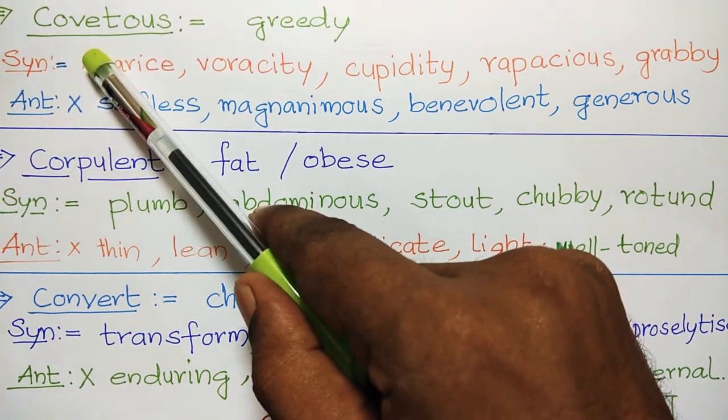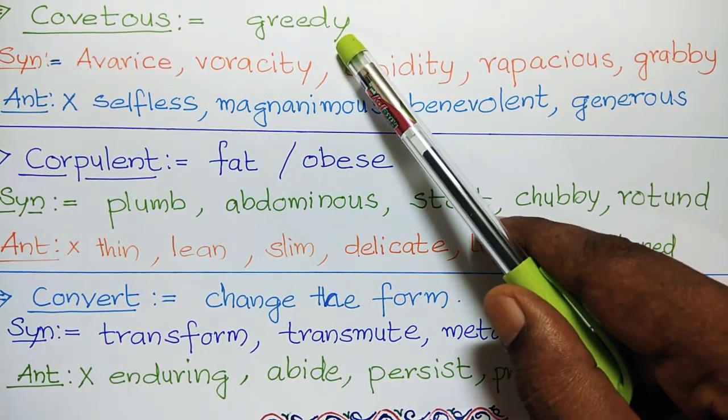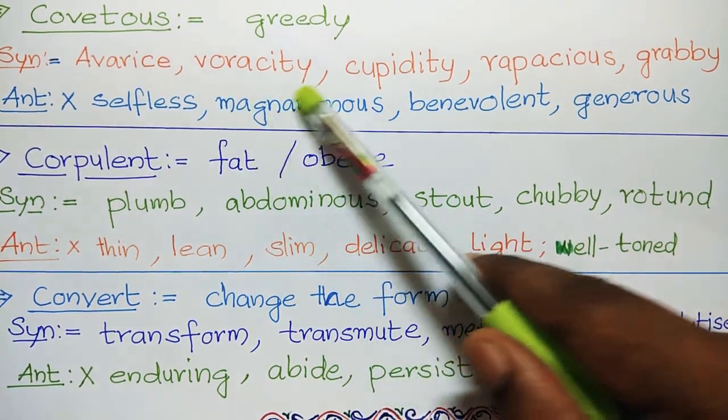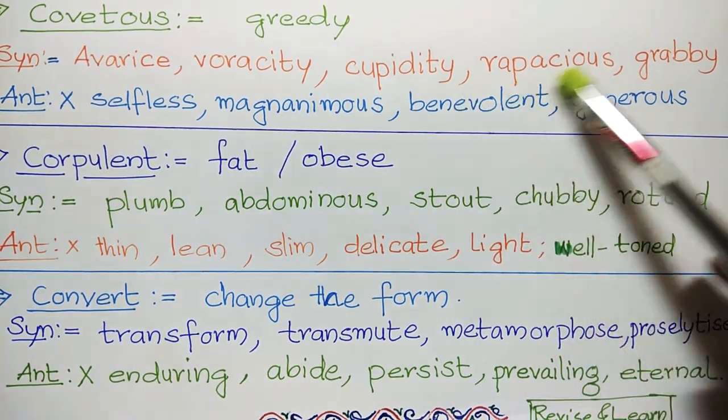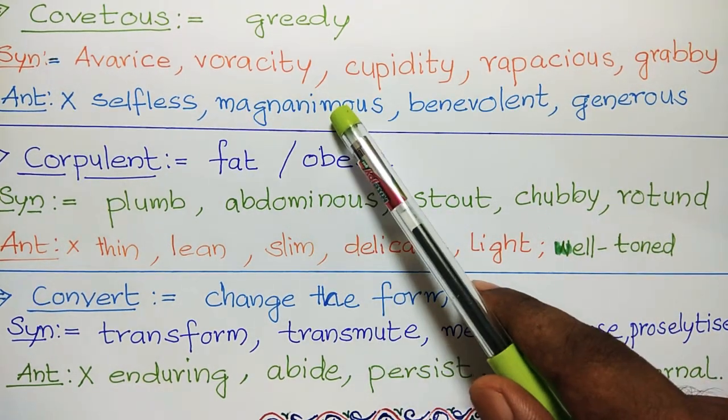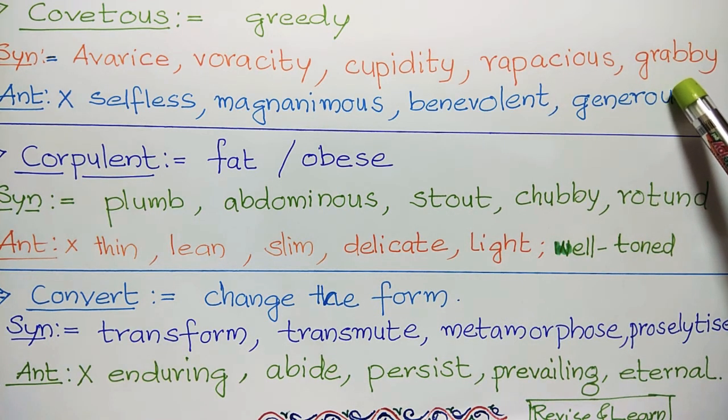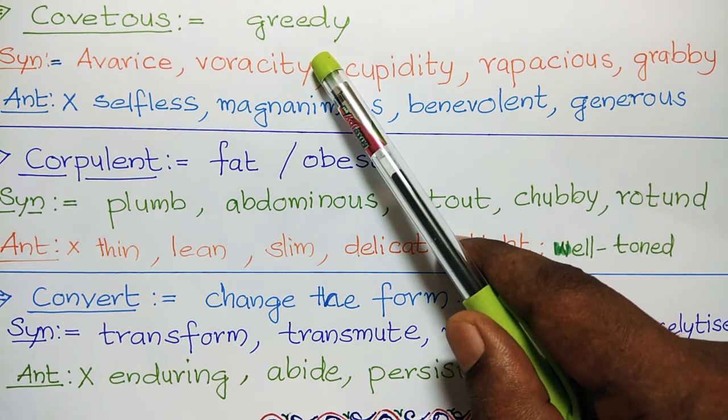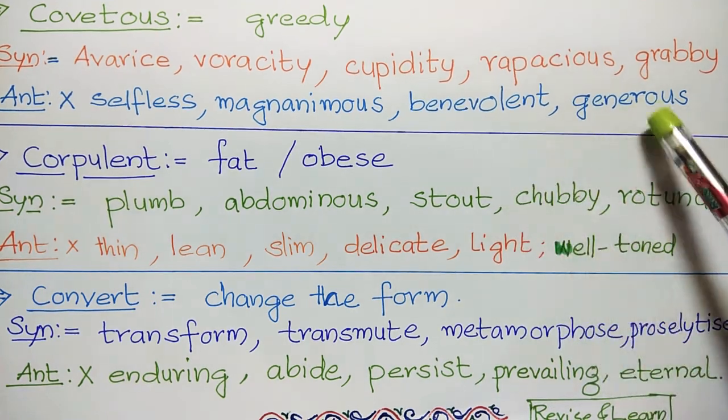Next, covetous. Covetous means greedy. Synonyms: avarice, voracity, cupidity, rapacious, grabby. Antonyms are selfless, magnanimous, benevolent, generous.